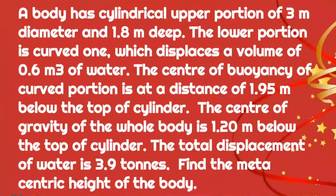The given problem: A body has a cylindrical upper portion of 3 meter diameter and 1.8 meter deep. The lower portion is a curved one which displaces a volume of 0.6 meter cube of water. The center of buoyancy of the curved portion is at a distance of 1.95 meter below the top of the cylinder. The center of gravity of the whole body is 1.20 meter below the top of cylinder. The total displacement of water is 3.9 tons. Find the metacentric height of the body.